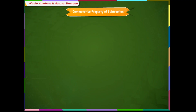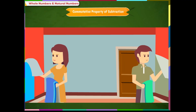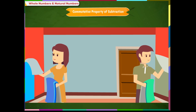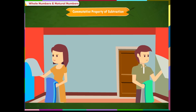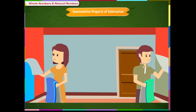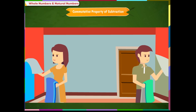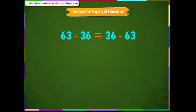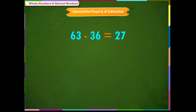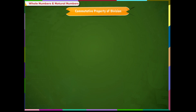Commutative property of subtraction: Prabha has 36 wallpaper pieces and they need 63 pieces to cover the wall entirely. The result is not the same in both cases when the order of numbers is changed. Therefore, we say that commutative property does not hold true for subtraction of whole numbers.